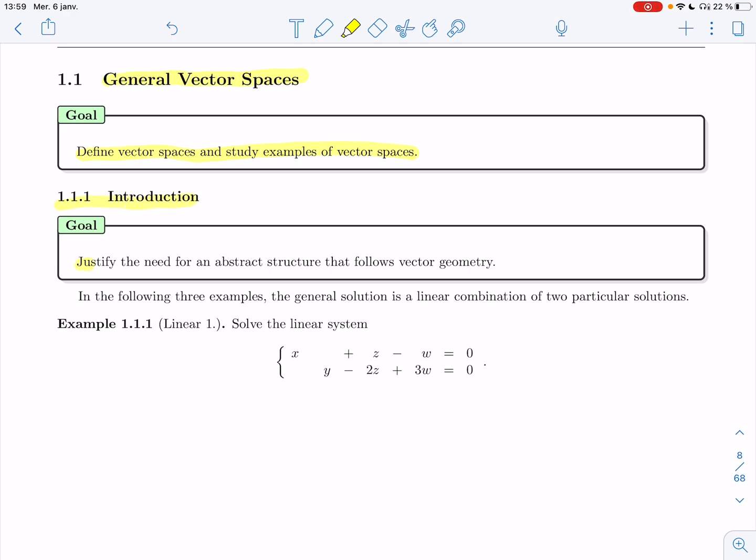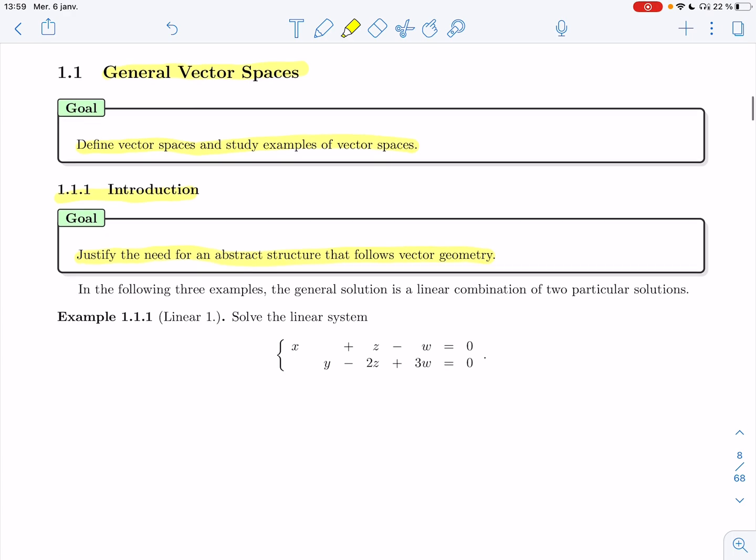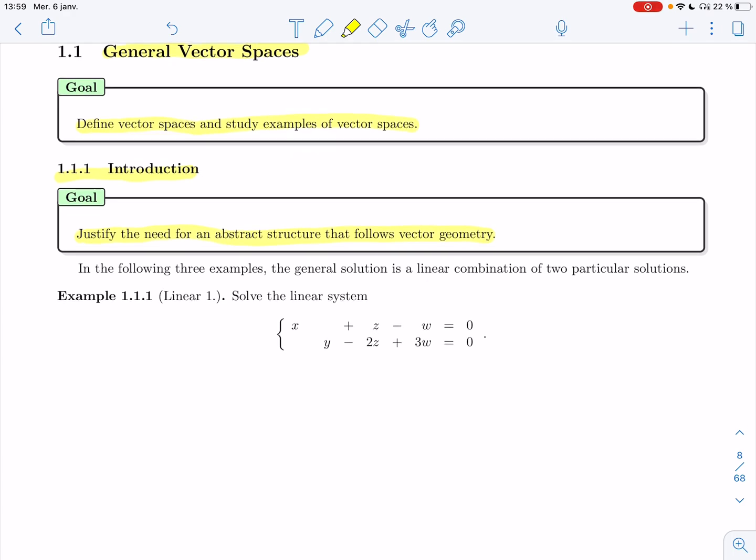The goal in this subsection is to justify the need for an abstract structure that follows vector geometry. We'll be working on this abstract structure of vector spaces for a bunch of weeks, so I want to make sure you realize why we're doing it and what in your math experience could point to such a thing being useful.